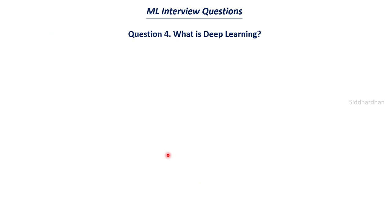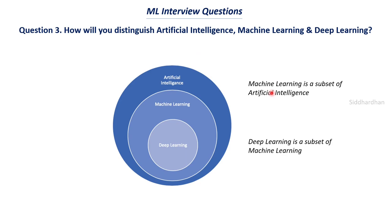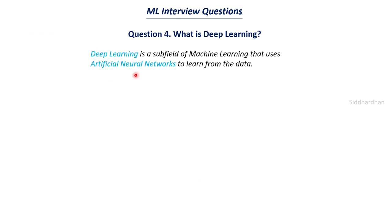The fourth question is: what is meant by deep learning? Deep learning is a subfield of machine learning that uses artificial neural networks to learn from data. In machine learning we have many models — logistic regression, support vector machine, random forest, etc. In deep learning, we specifically use special types of models called artificial neural networks. If you specifically use neural networks, we call that deep learning. The only difference is that deep learning specifically uses only artificial neural networks.